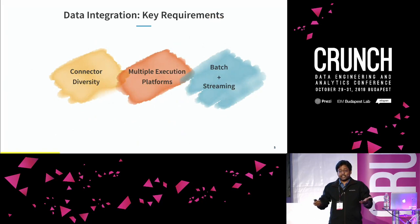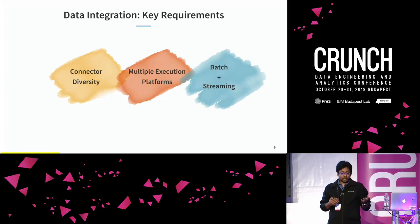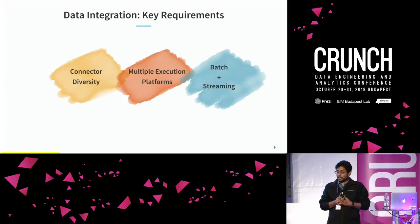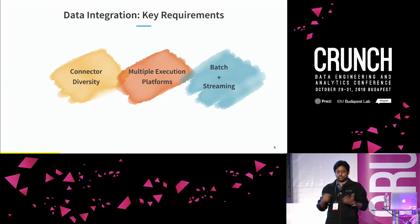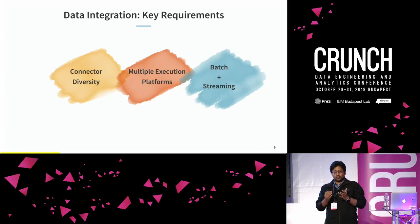The key requirements that jump out are: we need connected diversity so Goblin can talk to multiple different types of systems — multiple sources and multiple sinks. Goblin should support multiple execution platforms — MR mode on Hadoop, a cluster for mini-batch use cases on YARN, or for smaller use cases on a simple JVM or as a library. And Goblin should support both batch and stream data: stream to stream, stream to batch, batch to stream, and batch to batch.